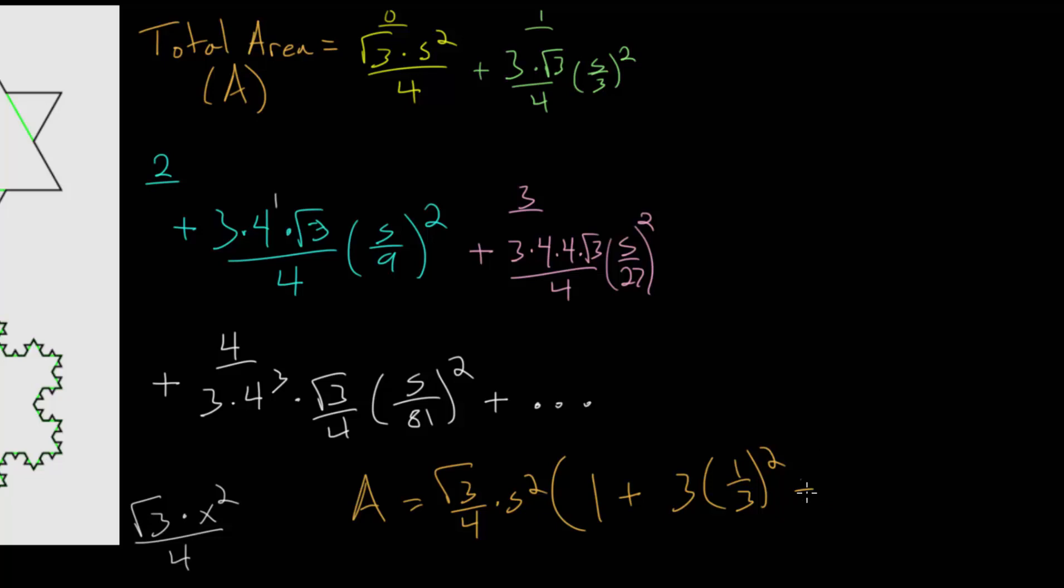And then from here we have the 3 times 4 and we would still be left with this expression or this factor here: 1 over 9 squared.